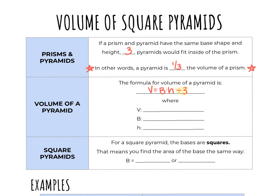The letters stand for the same thing they did in a prism. V is the volume, capital B is the area of your base, and H is the height, this time of the pyramid.